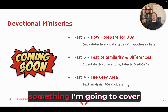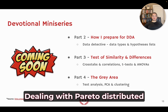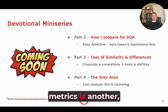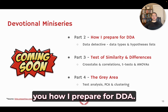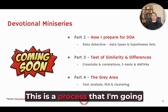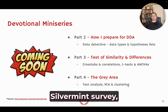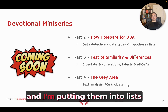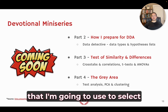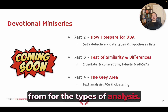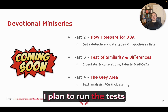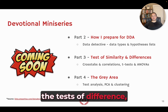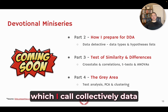Multimodality and dealing with Pareto-distributed metrics are topics I'll cover in each of these parts. Part two will show how I prepare for DDA — a process I'm going through now for the Silverman survey, taking different metrics and data types and putting them into lists to select from for the types of analysis I plan to run: the tests of similarity, the tests of difference, and the gray area tests, which I collectively call data detective work.